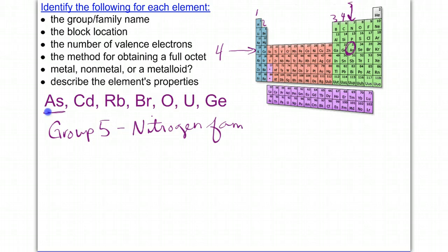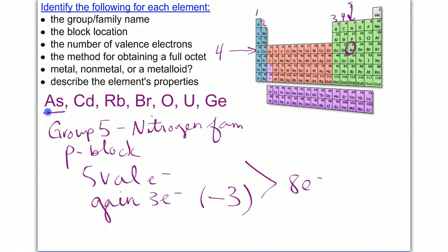Its block location, it's in the P block, and because it's in group five, it has five valence electrons. In order to obtain a full octet, it would want to gain three electrons, and it would get a charge of negative three by doing that. So if it gains three electrons, that's what's going to give it its full octet of eight electrons.